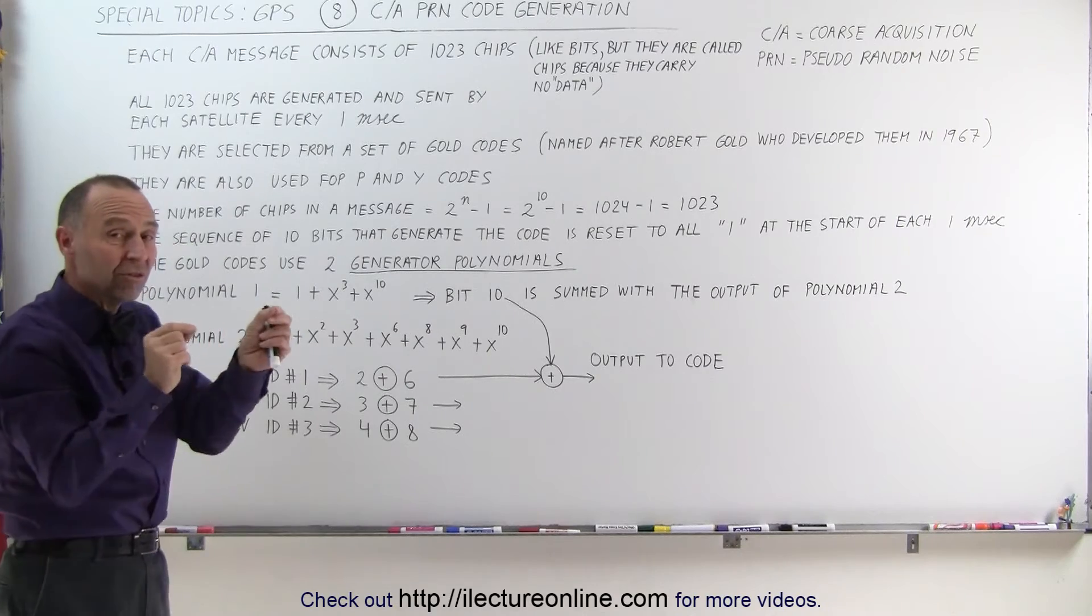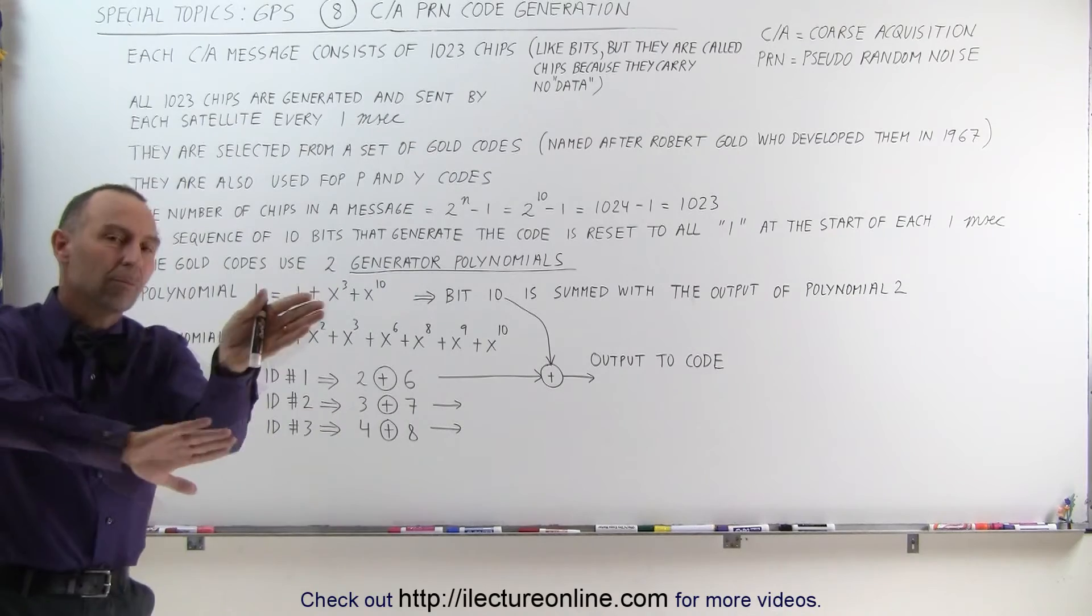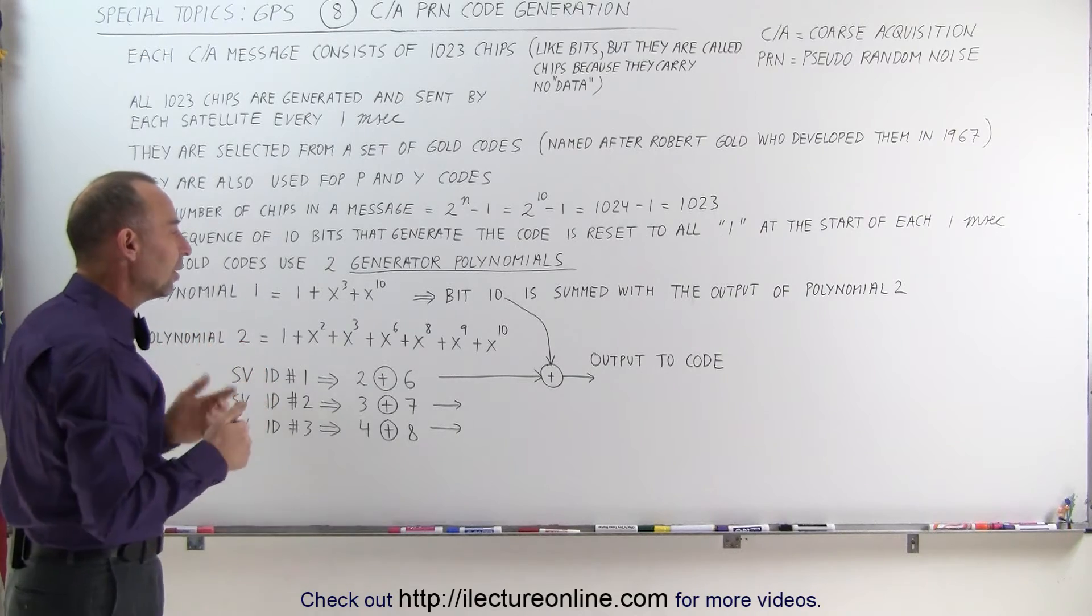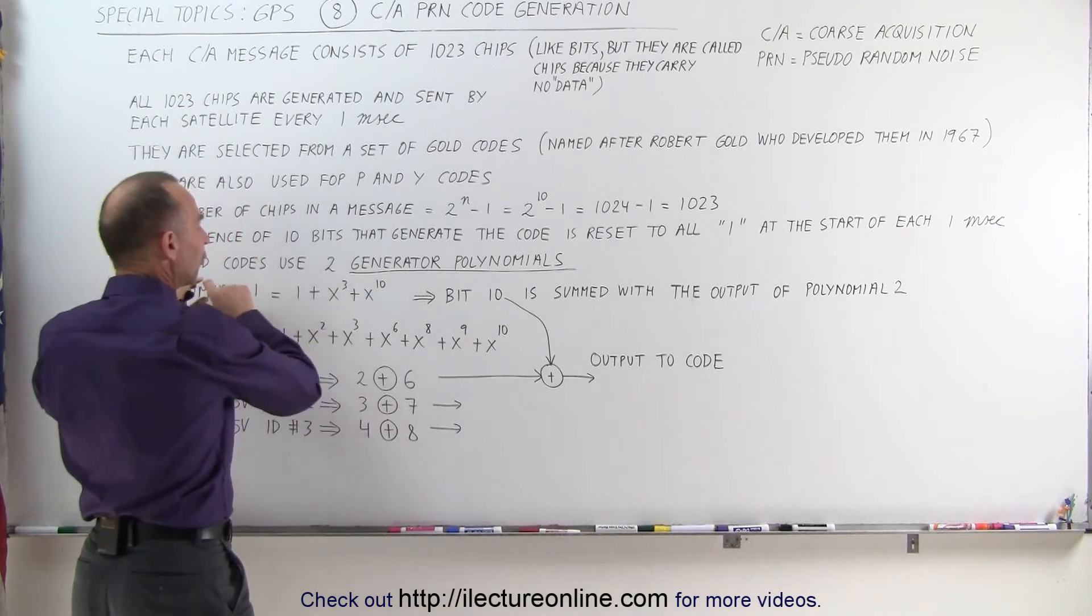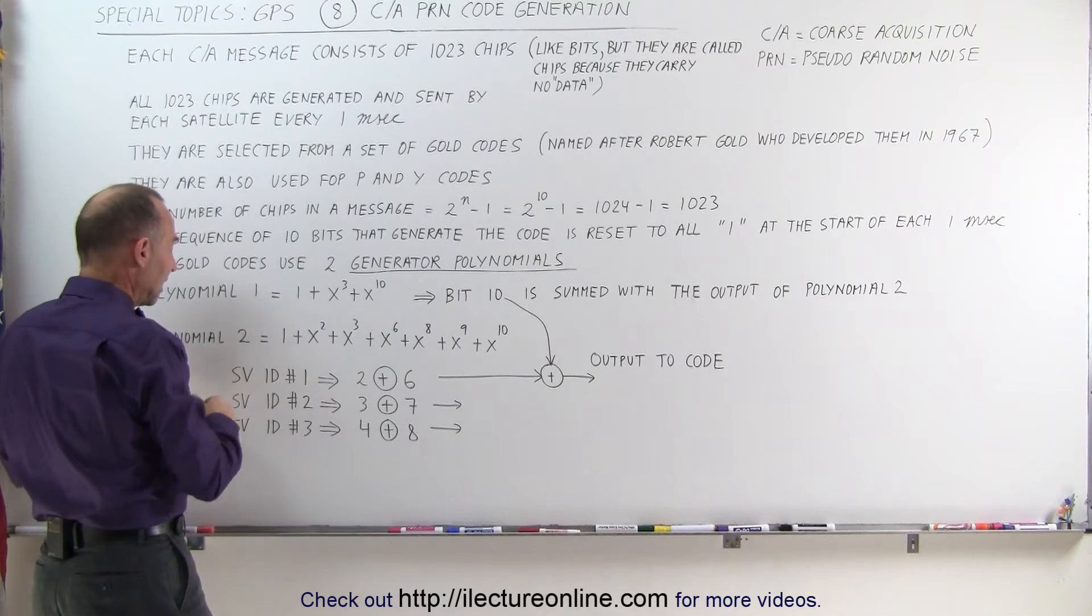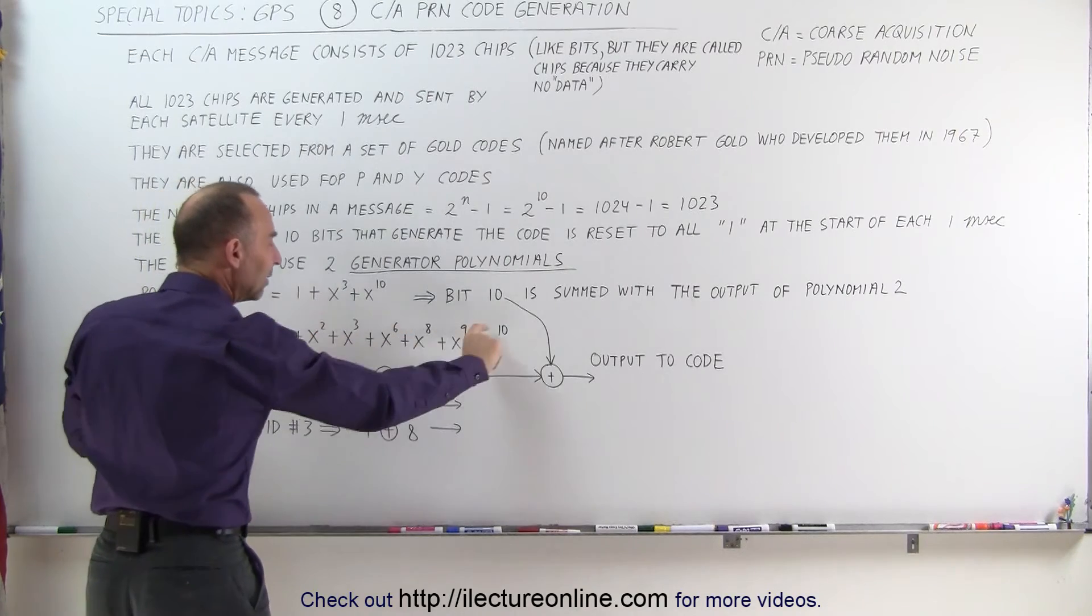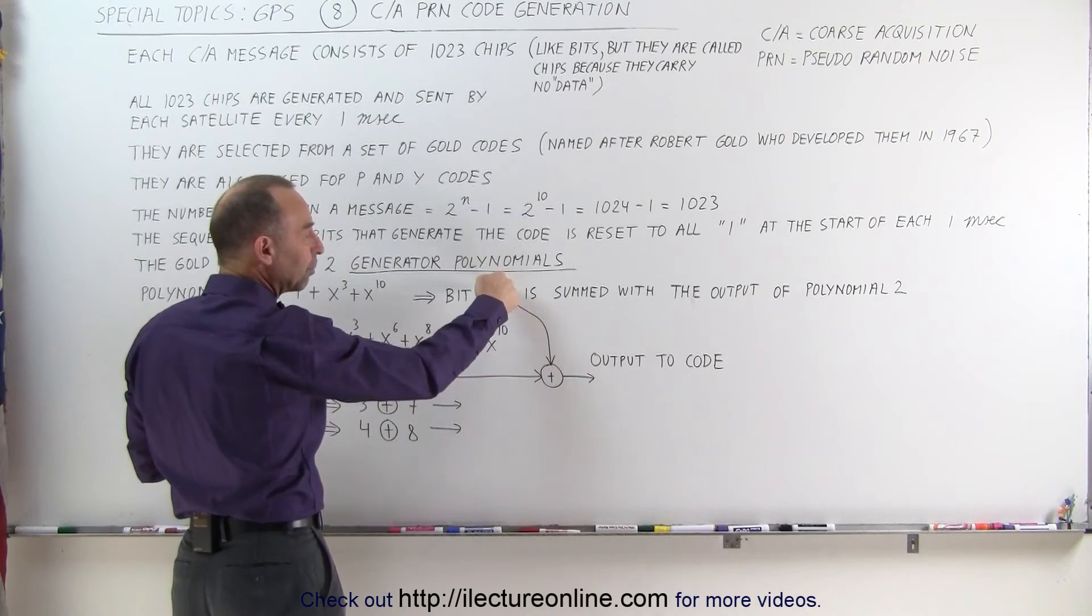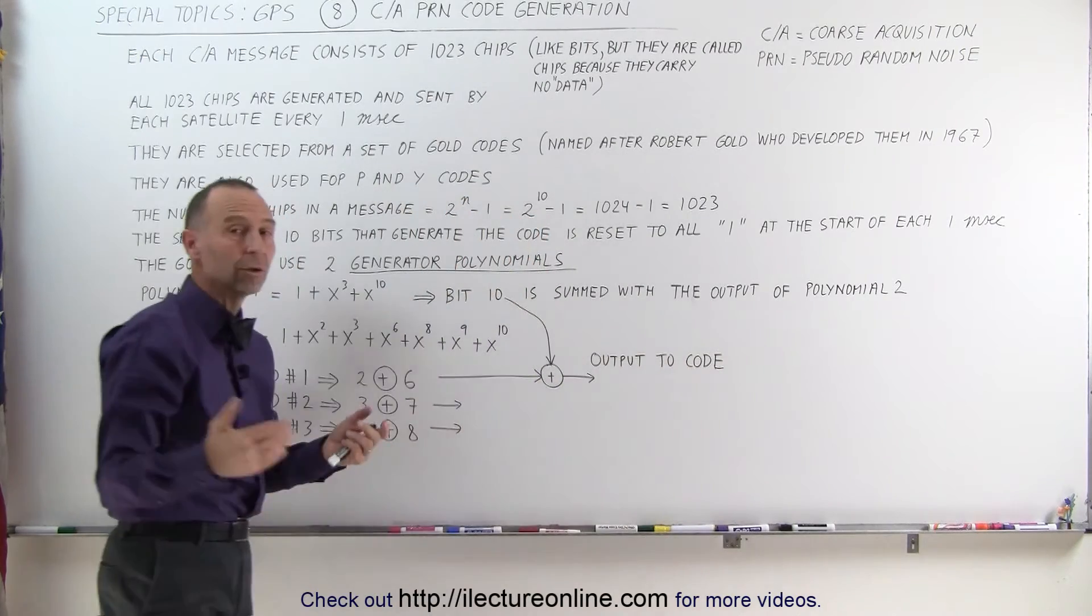Essentially, what happens is, we pull the 10th bit out of the first polynomial set, and sum that with the sum, in the case, let's say that we're dealing with space vehicle number 1, and then we sum up bit 2 and 6 from the 10-bit string of the 2nd polynomial, and add that, or sum it, with the output of the first polynomial by taking bit 10 value, and that will then be the output to the code that we're looking at. That's that gold code we're talking about.